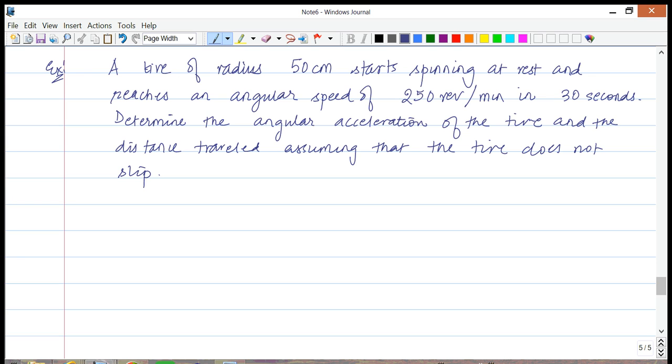Here's the problem: a tire of radius 50 centimeters starts spinning at rest and reaches an angular speed of 250 revolutions per minute in 30 seconds. The first question is to determine the angular acceleration of the tire, and the next one is to find the distance traveled. To get the angular acceleration, we'll do the same stuff that we did when we studied 1D motion: make a chart and figure out all the information.